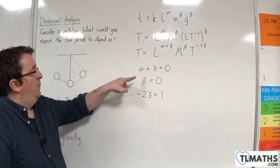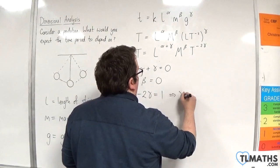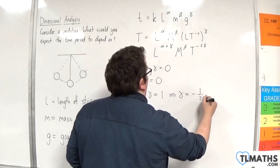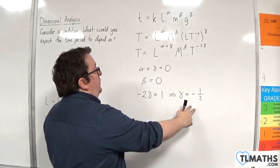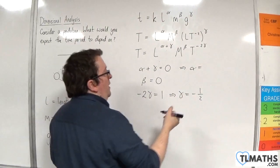From this, we can already see that beta is 0. Gamma is going to have to be minus 1 half. Now, if gamma is minus 1 half, then alpha would have to be equal to 1 half.